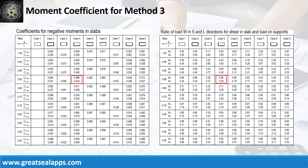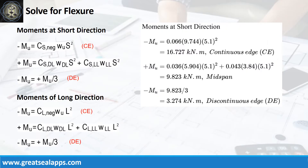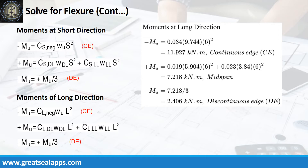Use case 4 at m equals 0.85. Refer to coefficients for negative moments, shear computations, dead load, and live load positive moments. Moments at short direction: negative moment at continuous edge is 16.727 kN/m; positive moment at mid-span is 9.823 kN/m; negative moment at discontinuous edge is 3.274 kN/m. Moments at long direction: negative moment at continuous edge is 11.927 kN/m; positive moment at mid-span is 7.218 kN/m; negative moment at discontinuous edge is 2.406 kN/m.